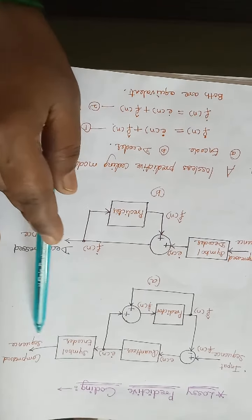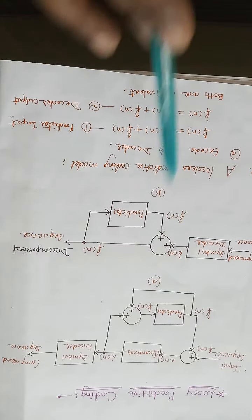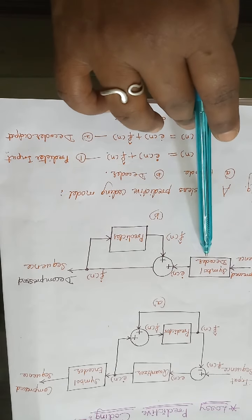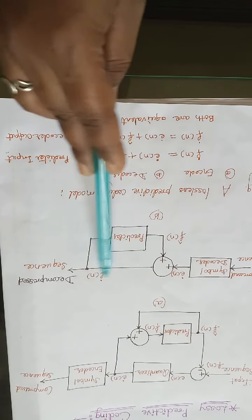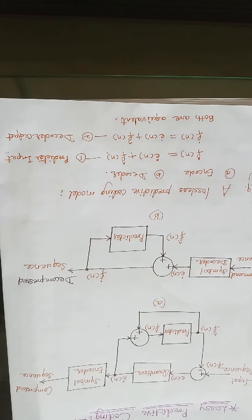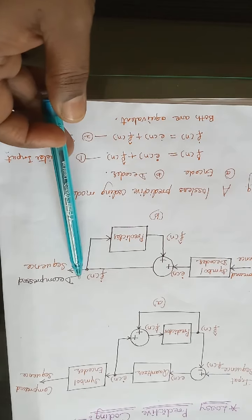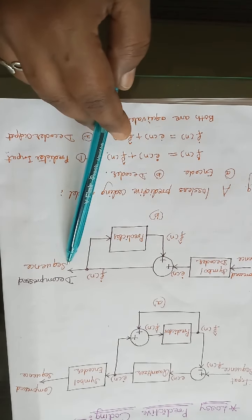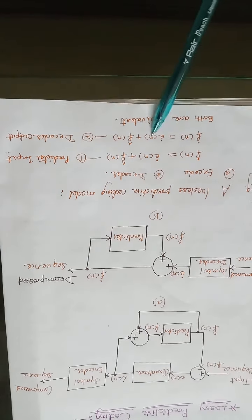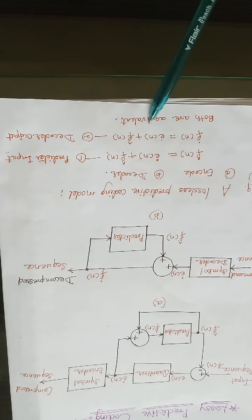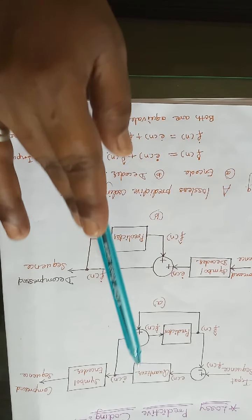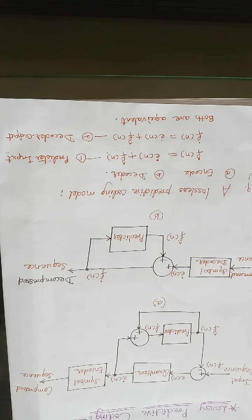The compressed sequence is given as input to the decoder, where the symbol decoder performs the inverse operation of the encoder. From this decoder, the decompressed sequence F-dot of N is defined as E-dot of N plus F-cap of N. The output of the decoder is F-dot of N equals E-dot of N plus F-cap of N, so both the output of the encoder and decoder are equivalent. We can accommodate the insertion of the quantization steps and the predictions generated by the encoder and decoder are identical.